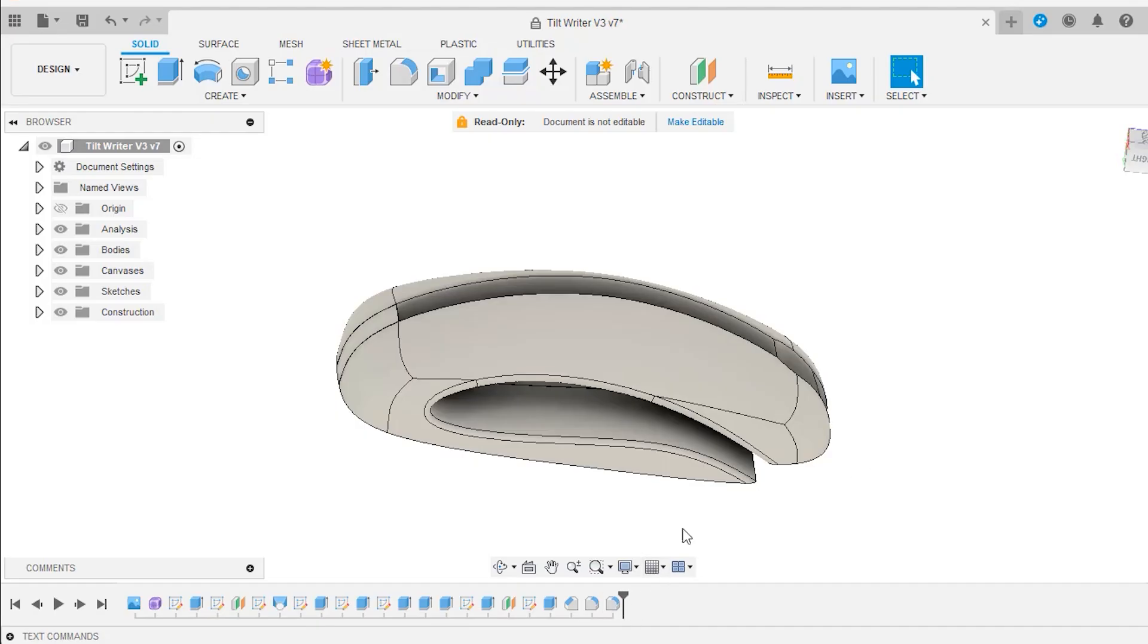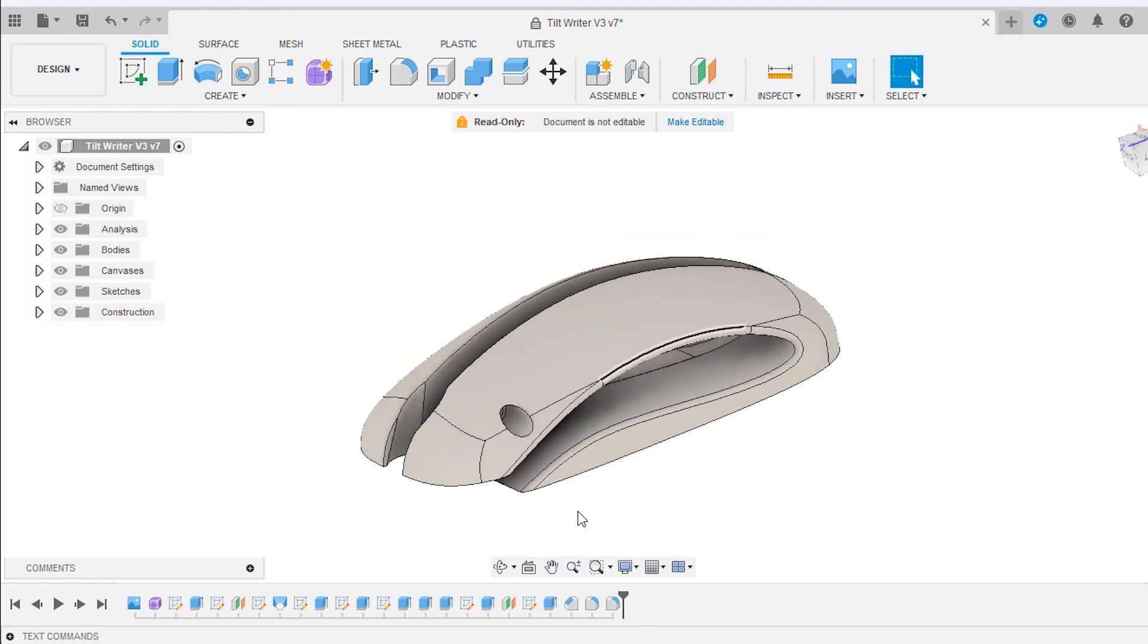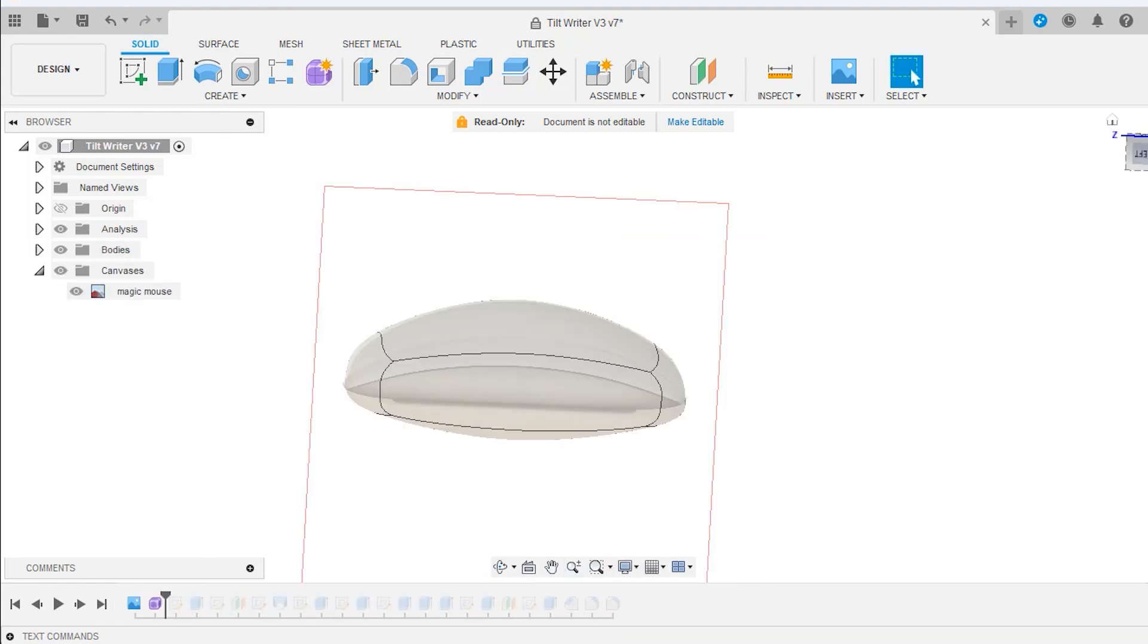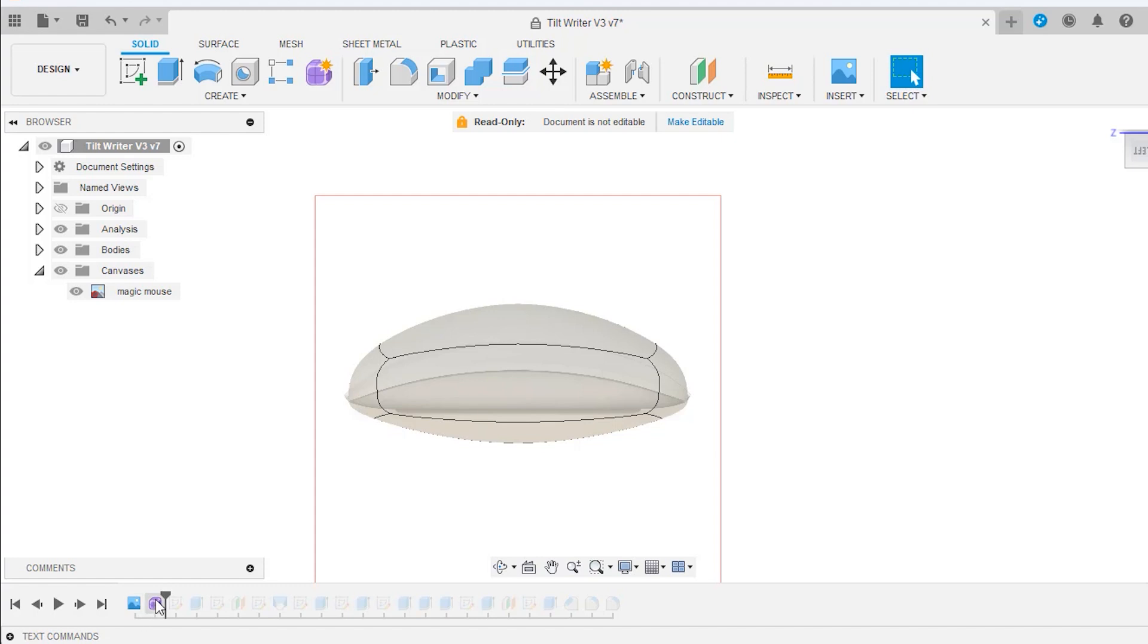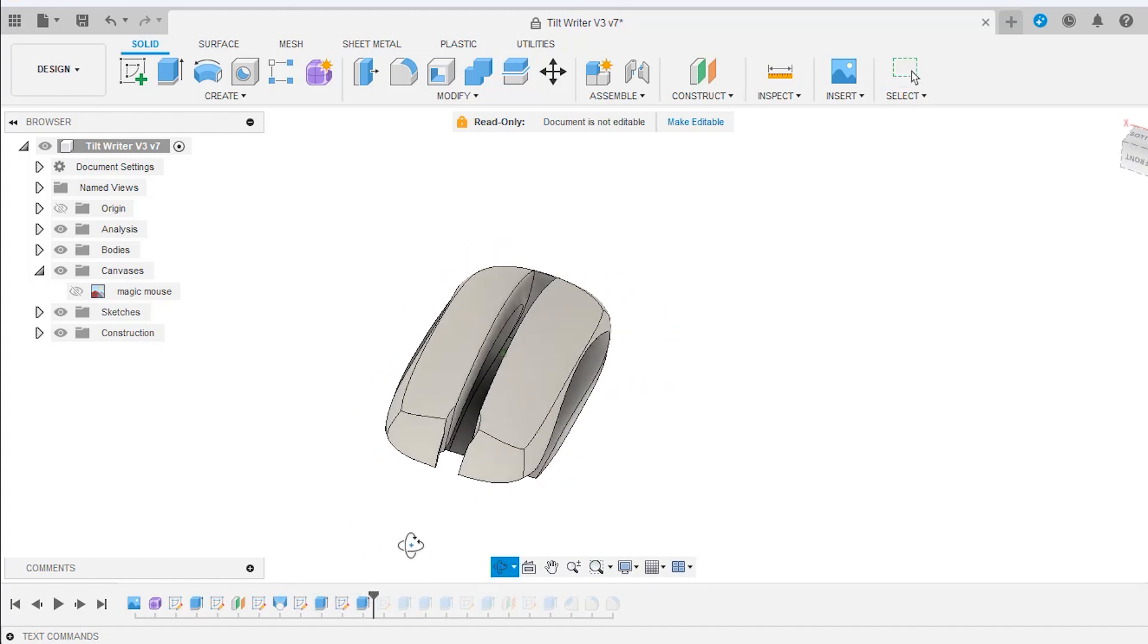In my second iteration, I experimented with part consolidation by combining the mouse section of the design with the flexing section. It took me a while to get a shape that I was happy with, and I ended up using a computer mouse as a reference for my shape. I then cut through a cavity that would allow the pen to be held and another cavity that would allow the mouse to flex.